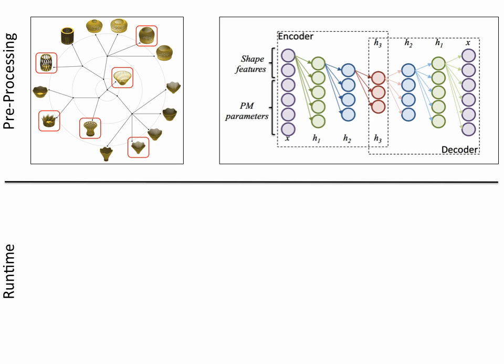In the second pre-processing step, we train an autoencoder network that learns a low dimensional mapping that simultaneously accounts for the original parameters as well as the shape signatures.